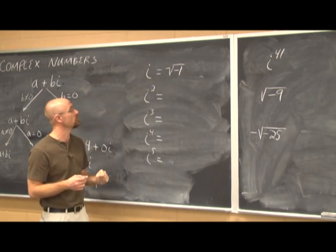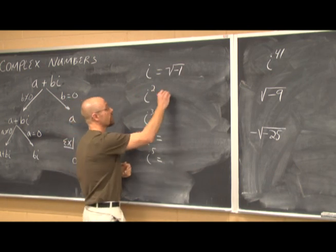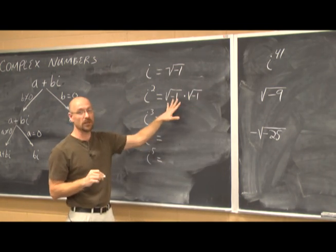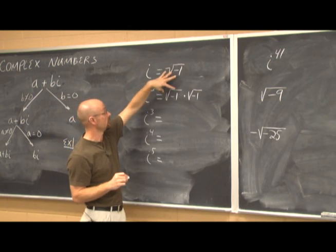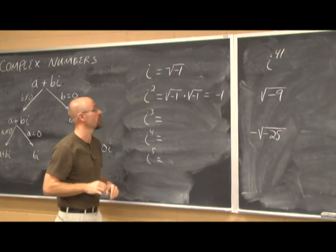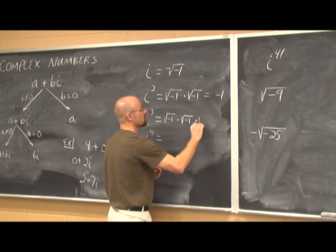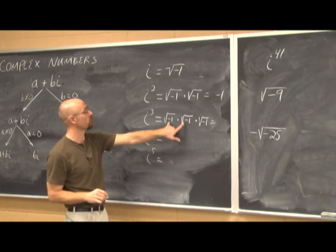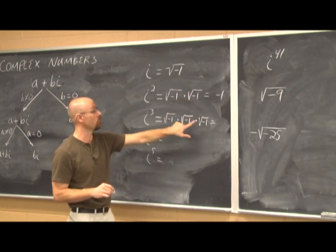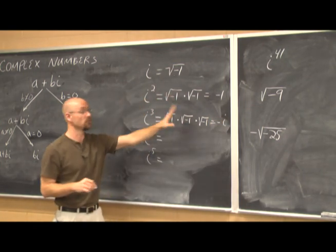Let's look at the properties of i. i squared is the square root of negative 1 times the square root of negative 1; squaring a square root causes them to cancel, giving negative 1. i cubed is the square root of negative 1 multiplied three times: the first pair gives negative 1, and negative 1 times i — the definition of i — gives negative i. So i cubed equals negative i.